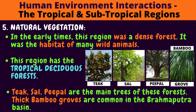Natural Vegetation: In early times, this region was a dense forest and was the habitat of many wild animals. This region has tropical deciduous forests. Teak, sal, and peepal are the main trees of these forests. Can you see the pictures of those trees — teak, sal, peepal? Thick bamboo groves are common in the Brahmaputra Basin.